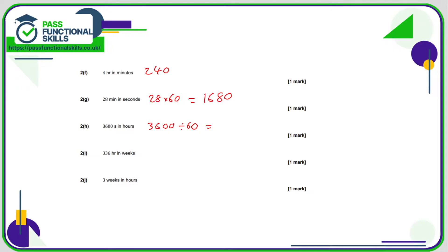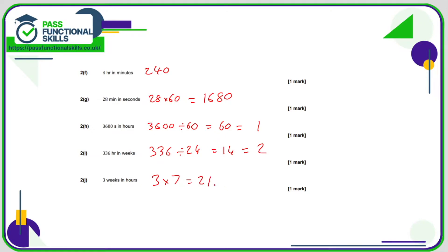3600 divided by 60 gives us 60 minutes, and then we convert 60 minutes into hours — 60 minutes is one hour. For 336 hours in weeks: first convert to days, 336 divided by 24 is 14 days, and 14 days is two weeks. Three weeks in hours: three lots of 7 days is 21 days, and 21 multiplied by 24 is 504 hours.